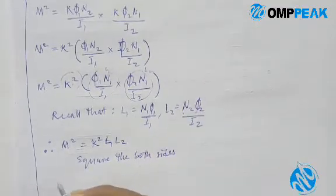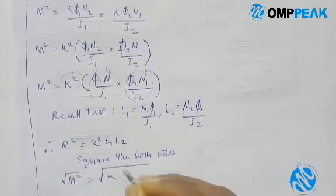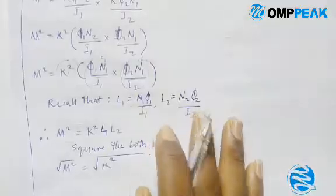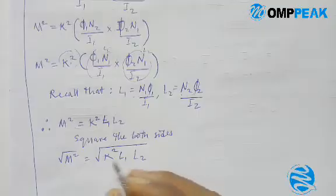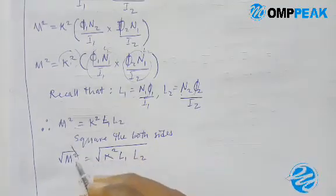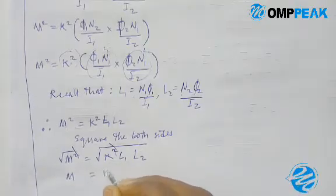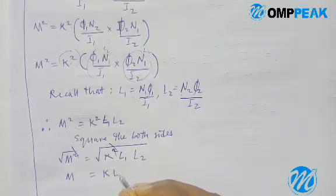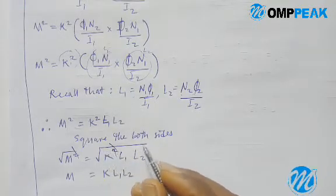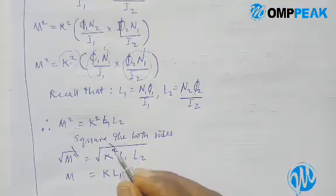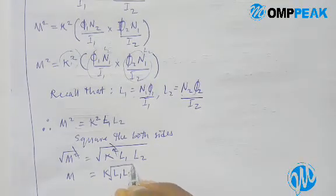By taking the square root of both sides, we have root of M squared equal to root of k squared times L1·L2. This square root cancels the square, so we have M equal to k times root of L1·L2. It's only k whose square is cancelled — the square root remains for L1 and L2. Don't forget that.